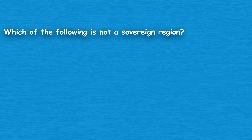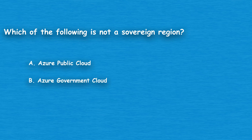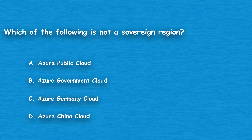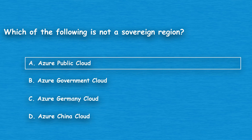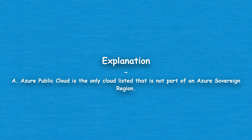The next question: which of the following is not a sovereign region? Option A: Azure Public Cloud. Option B: Azure Government Cloud. Option C: Azure Germany Cloud. The correct answer is Option A, Azure Public Cloud. Azure Public Cloud is the only cloud listed that is not part of an Azure sovereign region.